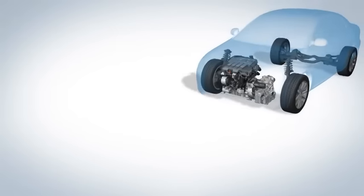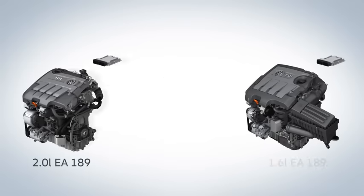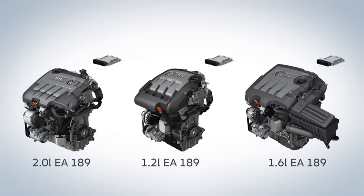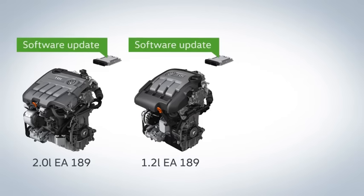We are currently developing technical measures to ensure that the affected vehicles meet the legal requirements. These differ for EA 189 engines in Europe depending on the engine type. The 2.0 and 1.2 liter engines get a software update. Within this process, the deactivating software is removed and new engine control software is installed. This will take about 30 minutes.